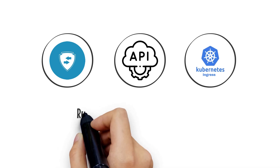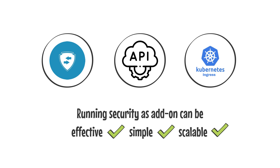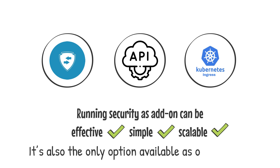If you have a reverse proxy, API gateway, or Kubernetes ingress, running security as an add-on can be effective, simple, and scalable. It's also the only option available as open source.